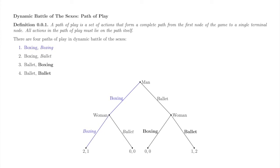Here, the man goes boxing and the woman follows him. Here, the man goes boxing and she goes to the ballet. Here, the man goes to the ballet and she goes to the boxing match. Even though the previous outcome and this outcome have the same payoffs, they are different outcomes and therefore different terminal nodes. Here, the man goes to the ballet and the woman follows him there. Note that these paths of play do not specify the woman's strategy, merely the action she took.